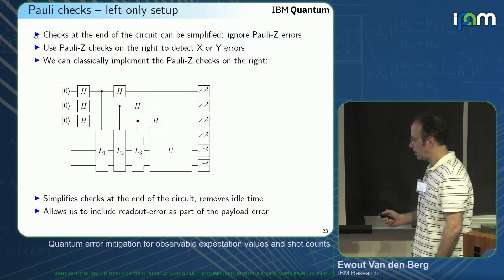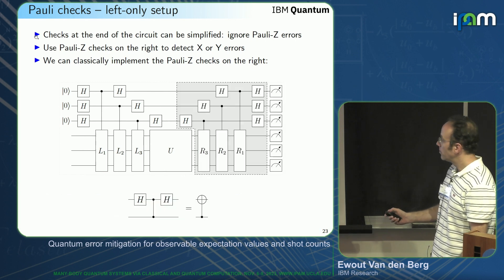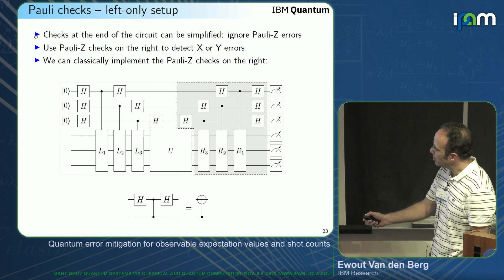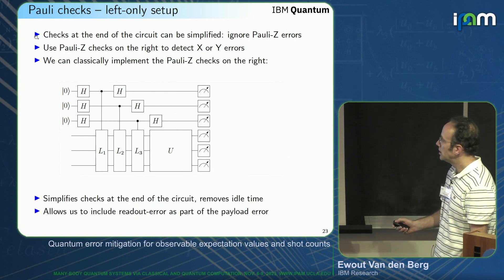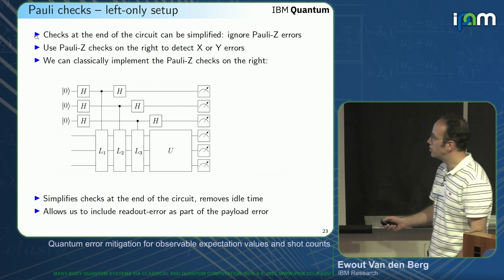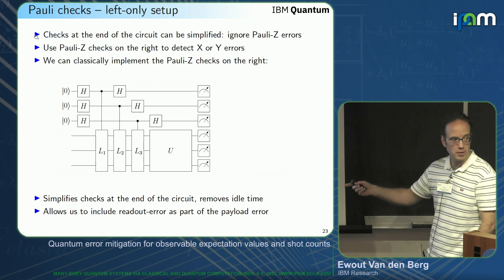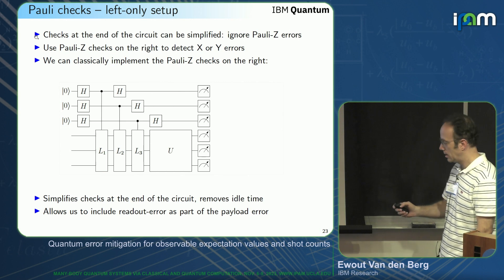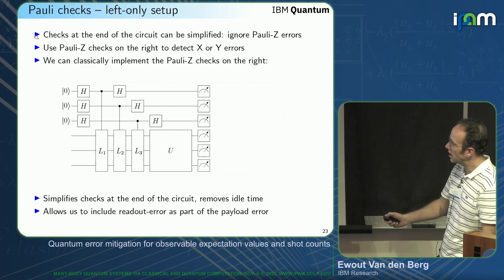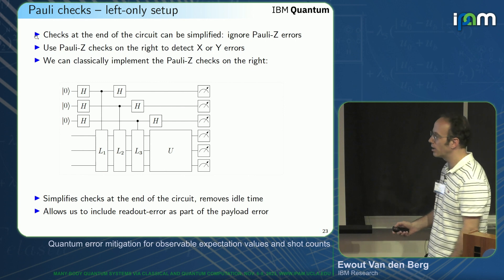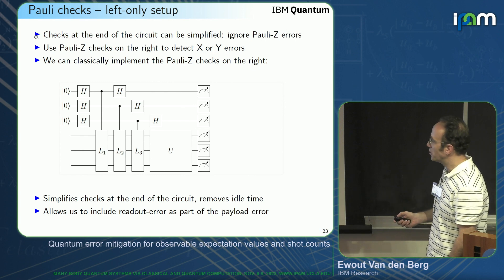The big advantage of implementing checks classically is that there will be idle time while you apply the operator — that will be gone. It also allows you to do readout error checks with the same mechanism. Interestingly, you could measure all of these check qubits even before you start applying the unitary.